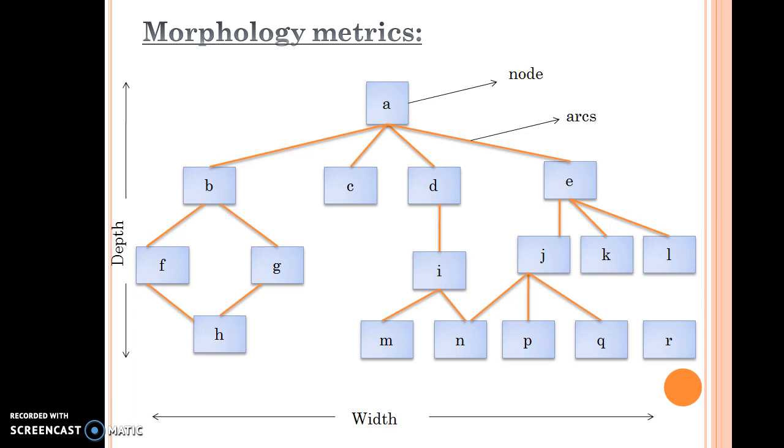By using the formula size equals N plus A, we can calculate the size of the particular matrix. Here the total number of nodes are 17 and the edges are 18, so the total size is 35. Arc-to-node ratio can be calculated using the formula R equals A divided by N. It measures the connectivity density of the architecture and may provide a simple indication of the coupling of the architecture.